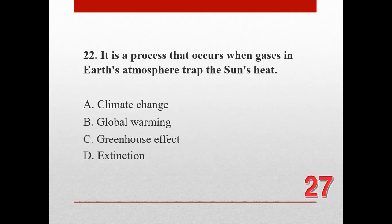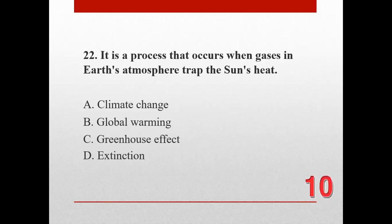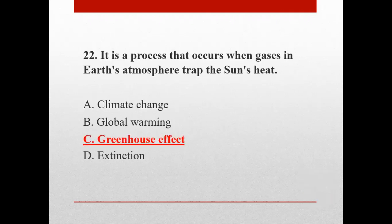Number twenty-two. It is a process that occurs when gases in Earth's atmosphere trap the sun's heat. A. Climate change, B. Global warming, C. Greenhouse effect, and D. Extinction. The correct answer is C. Greenhouse effect.